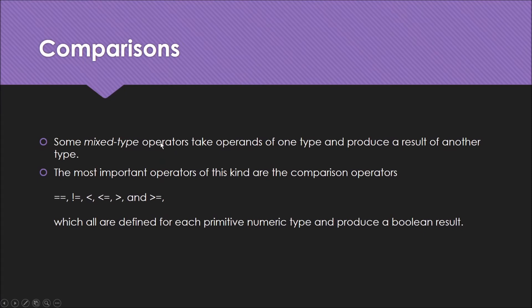There are also mixed-type operators that take operands of one type and produce a result of another type. These comparison operators include the double equal sign (==) which is used for comparison. Normally, a single equals sign (=) means assignment — the value of B goes into A — but with double equals (==) you are comparing whether A equals B.